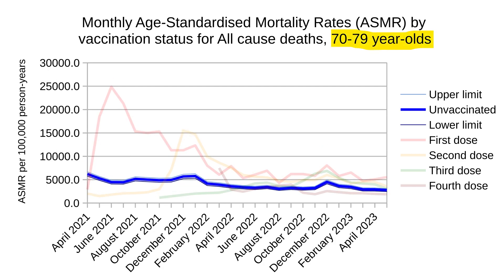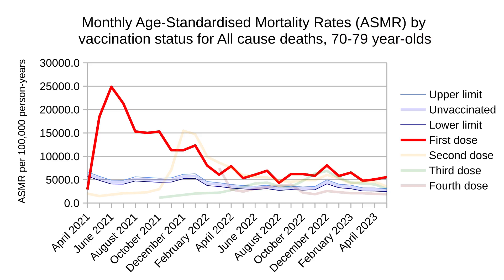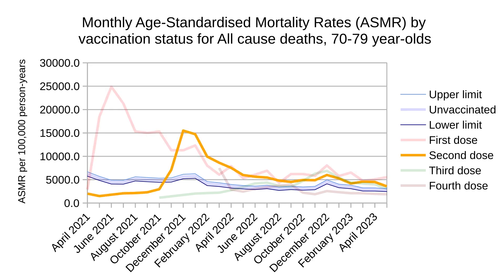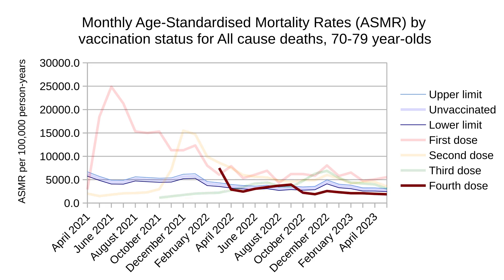For 70-year-olds, as expected, mortality is much, much higher generally. All-cause mortality for those who took a single dose only was very high and stayed higher for the entire period. Second dose started off well, but showed significantly higher mortality as time progressed. Third dose also started off well, but by mid-2022 was trending above control group mortality. This is the first age group where the mortality rate of four-dose recipients has not been significantly different from that of the control group — very similar, actually.